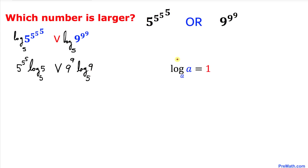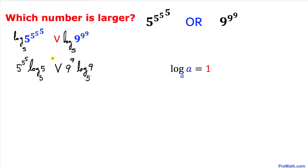We have this handy tool: log base a of a is always equal to 1. That means if the argument and the base are the same number, the result is always 1. Applying this to log base 5 of 5, since both numbers are the same, this equals 1. So 1 times our expression just gives us that expression.